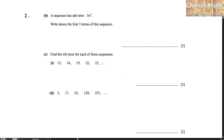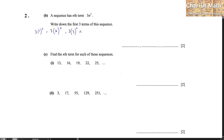A sequence has nth term 3n-squared. Write down the first three terms of this sequence. We're going to substitute the number 1 into n as the first term, number 2 as the second term, and number 3 into n for the third term. So we are producing 3, 12, and 27.